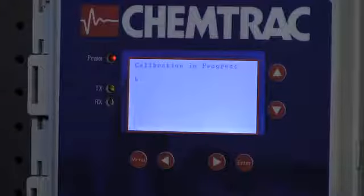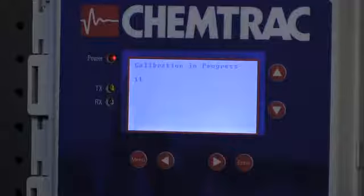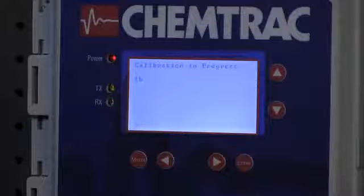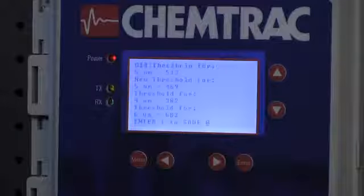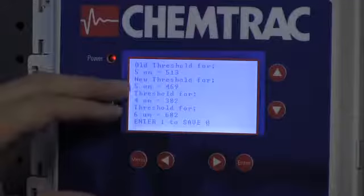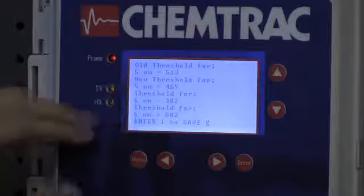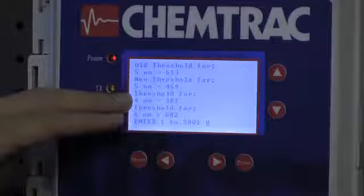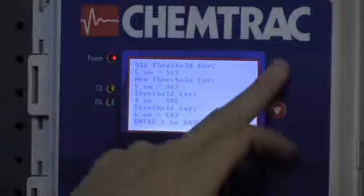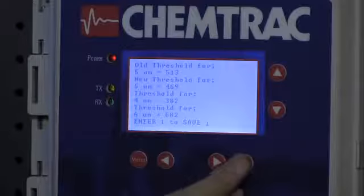Once again, it'll take about 10 to 15 seconds. And it's going to show us our old threshold value of 513, our new threshold value of 469, and our neighboring thresholds. So, to accept that, we change it to 1 and hit enter to save.